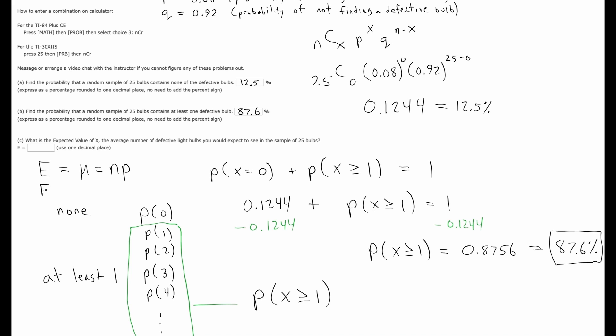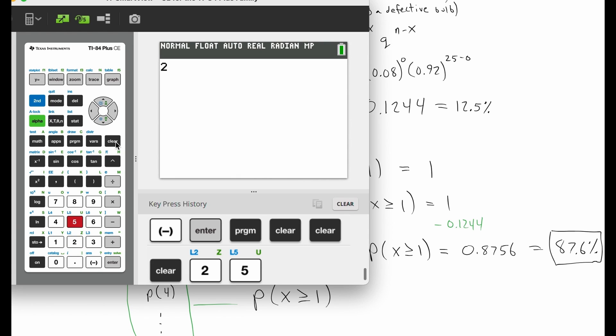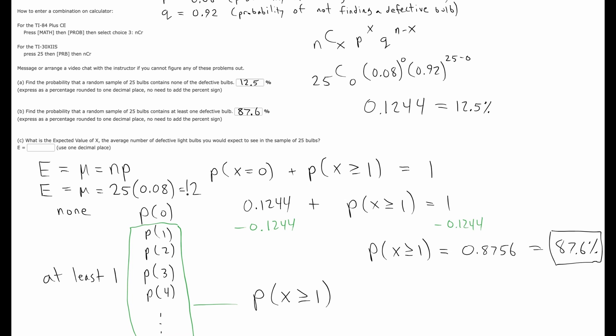So we will want N, which is 25, times the probability of success. I get two defective bulbs is the expectation. That is 8% of 25.